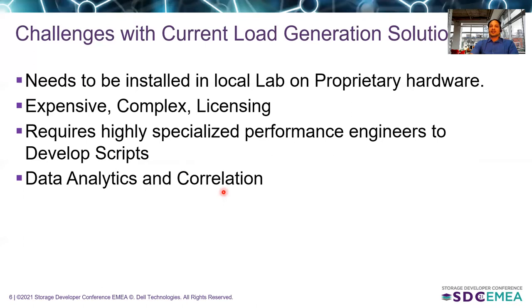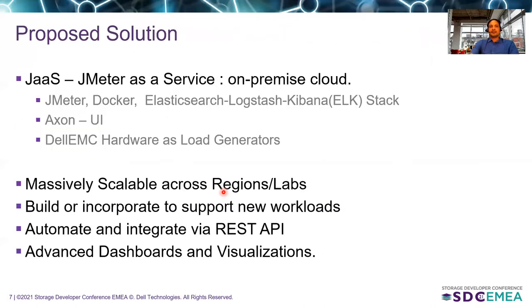With these challenges, we started looking at how to build our own solution in our own lab — that's where we built JAS, JMeter as a Service. It's basically an on-premises cloud solution, 100% built on open source tools like JMeter, Docker, and Elasticsearch, and it runs on our own servers as load generators. We can scale across regions and labs with massive scaling support. We can incorporate new workloads using JMeter, and it has a REST interface so we can integrate and automate continuous integration flows.